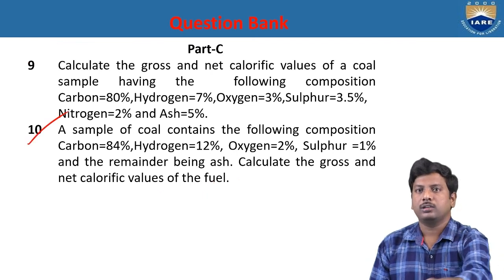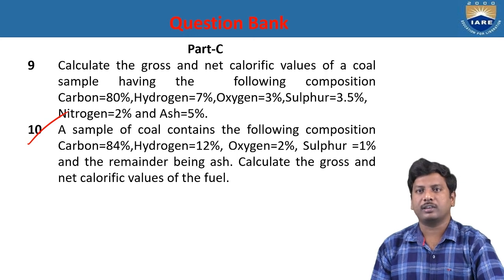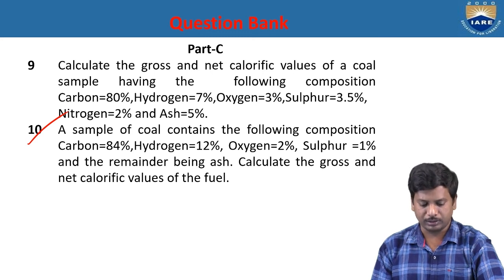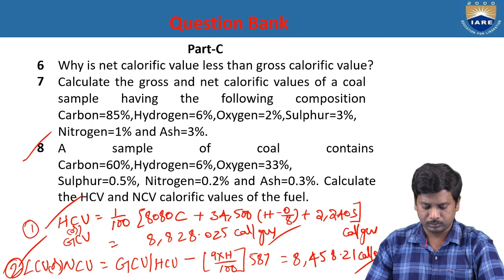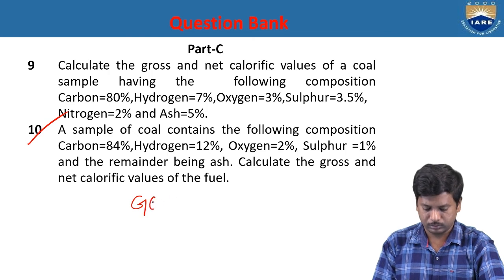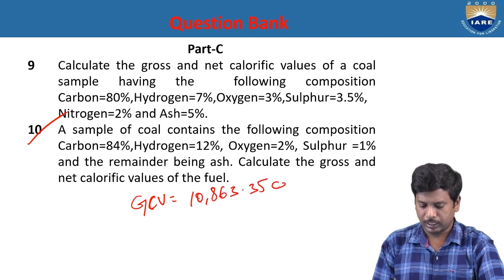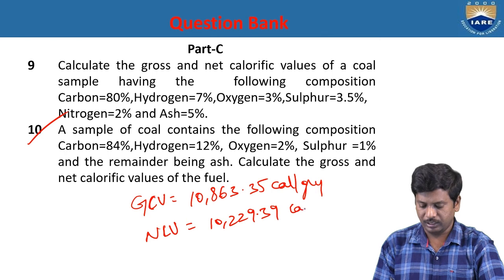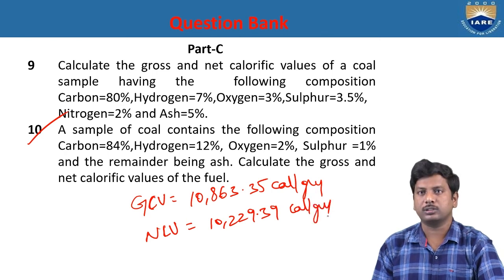For the tenth problem, a coal sample has the following composition: C = 84%, H = 5%, O = 2%, S = 1%, and the remainder being ash. Calculate the GCV and LCV. Using the HCV/GCV formula: GCV = 10,863.35 cal/g. And NCV = 10,229.39 cal/g. These are the solutions for the numerical problems.